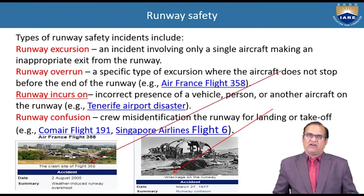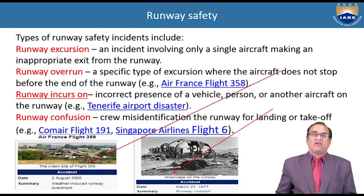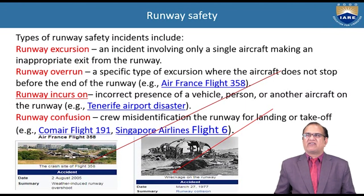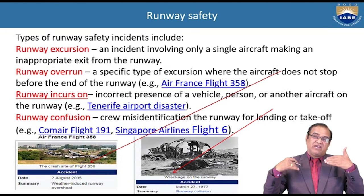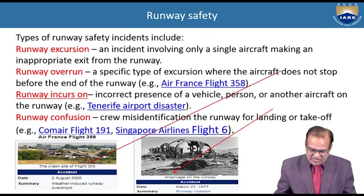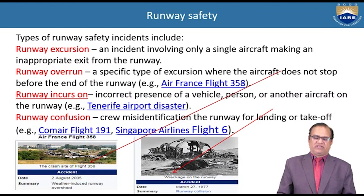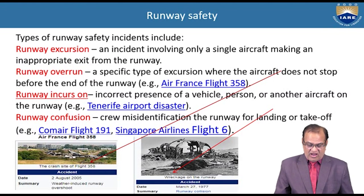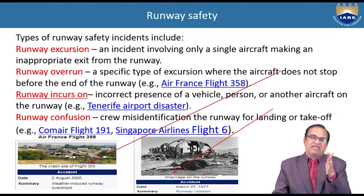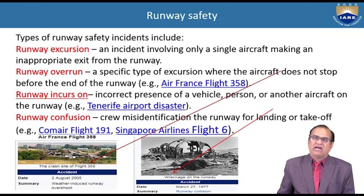Runway safety incidents include runway excursion — an accident involving a single aircraft making an inappropriate exit from the runway — and runway overrun, where the aircraft does not stop before the end of the runway. Runway incursion involves an incorrect presence of a vehicle, person, or another aircraft on the runway, such as the Tenerife aircraft disaster. Runway confusion occurs when crew misidentifies the runway for landing or takeoff.